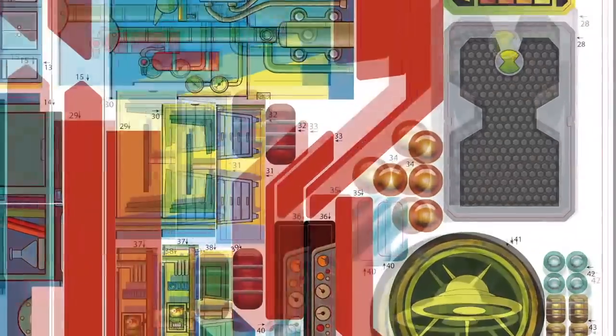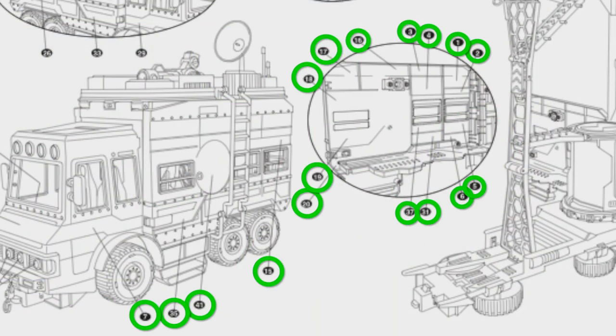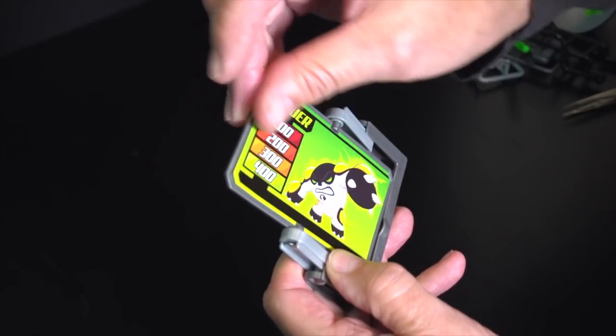Let's start with the labels. All of the labels on the sheet are numbered and correspond to the location numbers on the instruction sheet. Peel and place the labels accordingly.